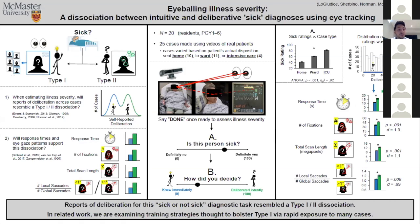We reasoned that this dual process logic makes an interesting prediction about how clinicians perceive their decision making. We asked: will reports of deliberation across cases resemble a type one/type two dissociation? If you give a clinician a bunch of patients to assess as sick or not, you might expect many to cluster under type one — the clinician says that was very intuitive. We are also interested in whether this dissociation would be supported by response time and eye gaze patterns.